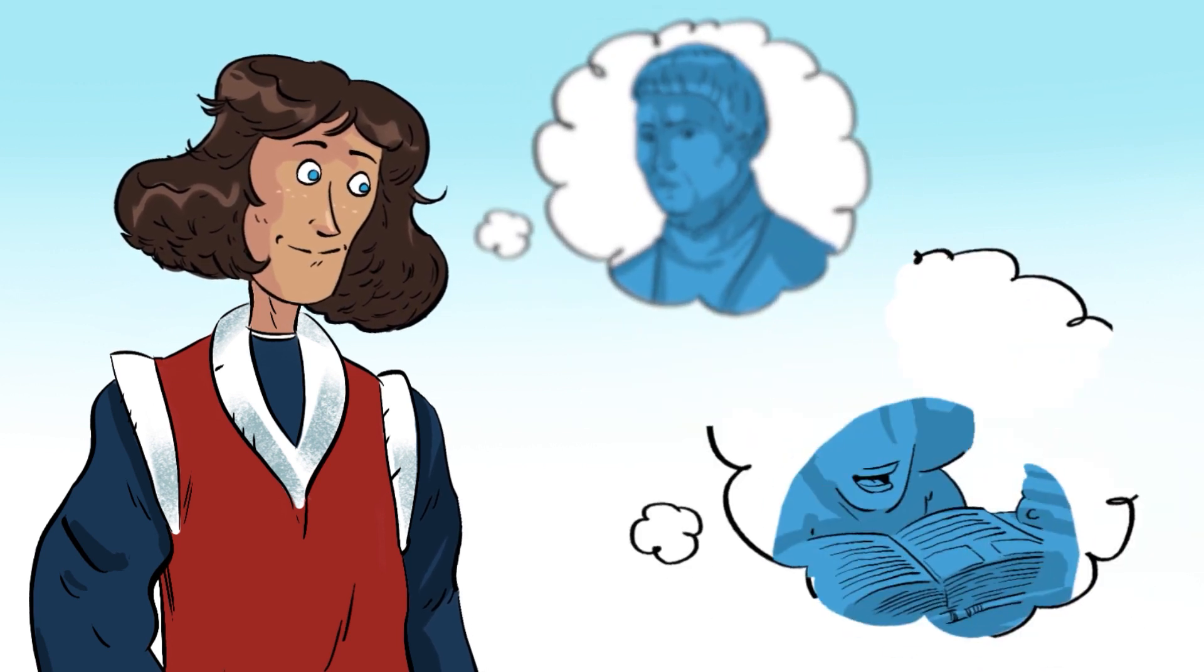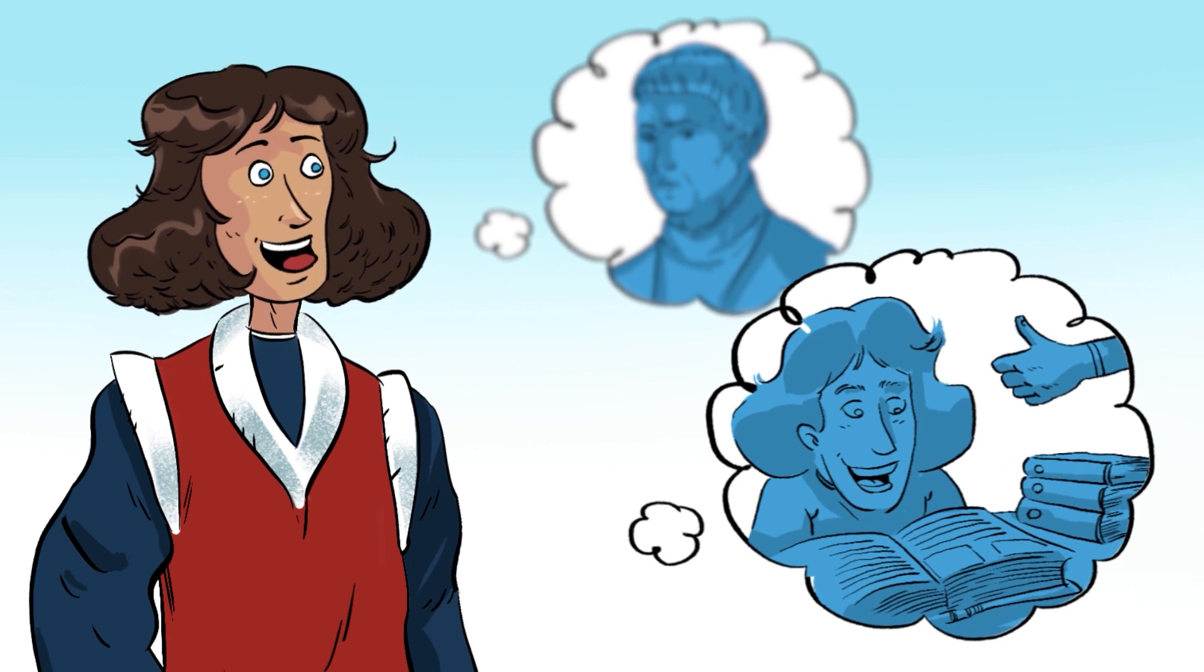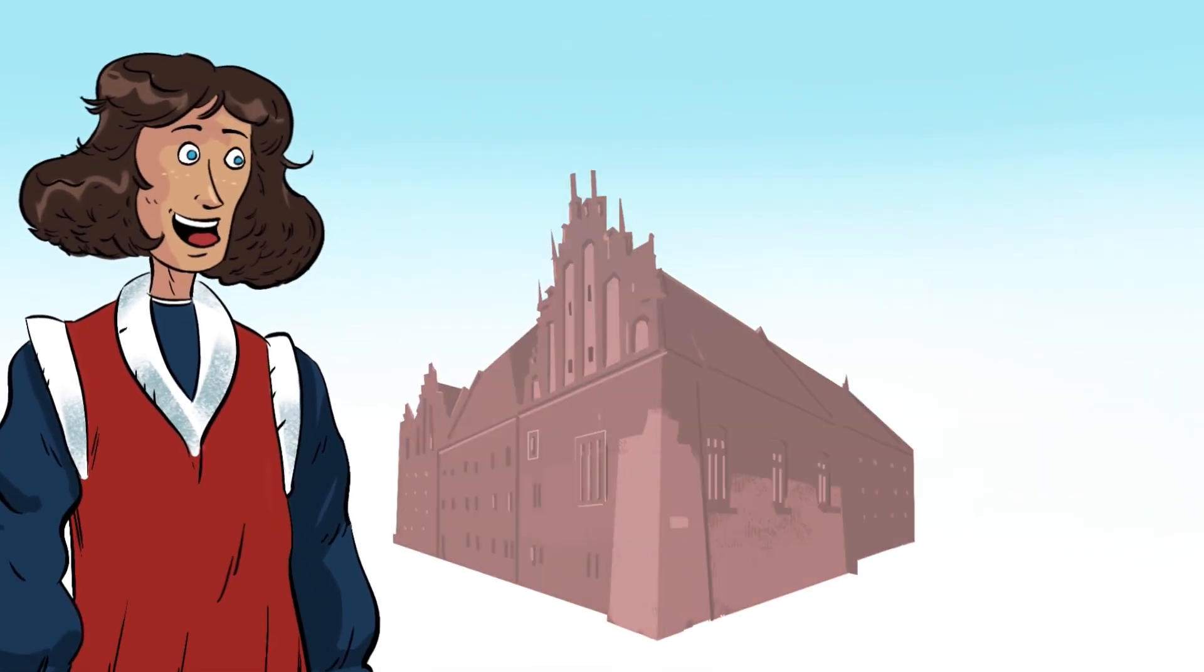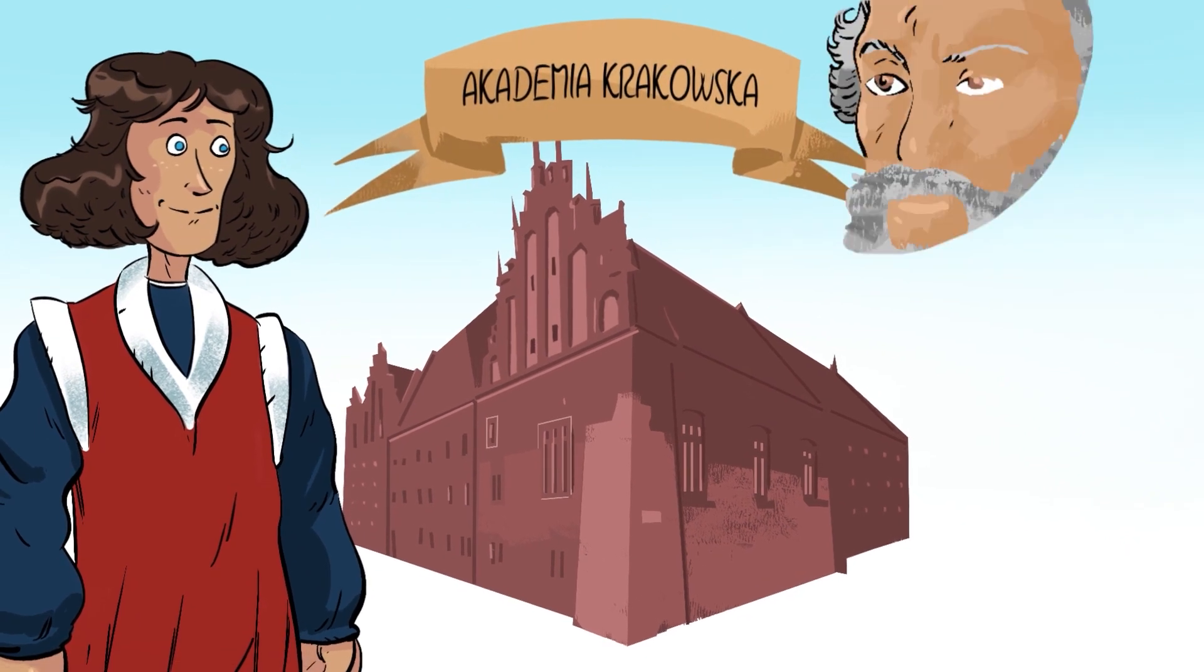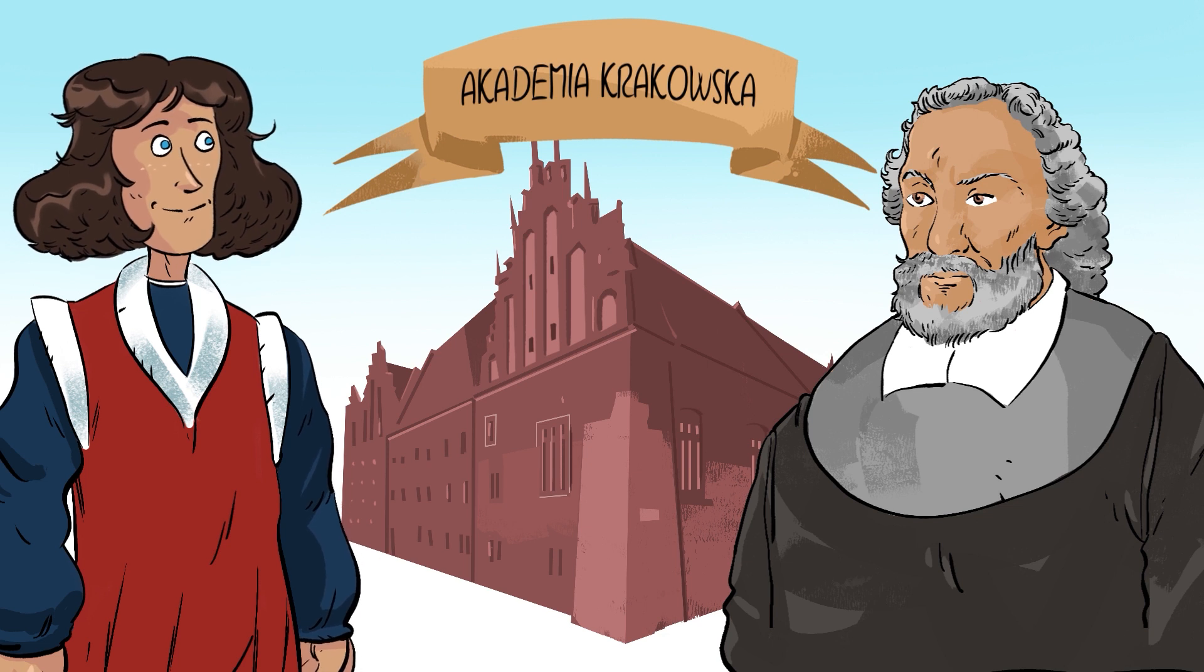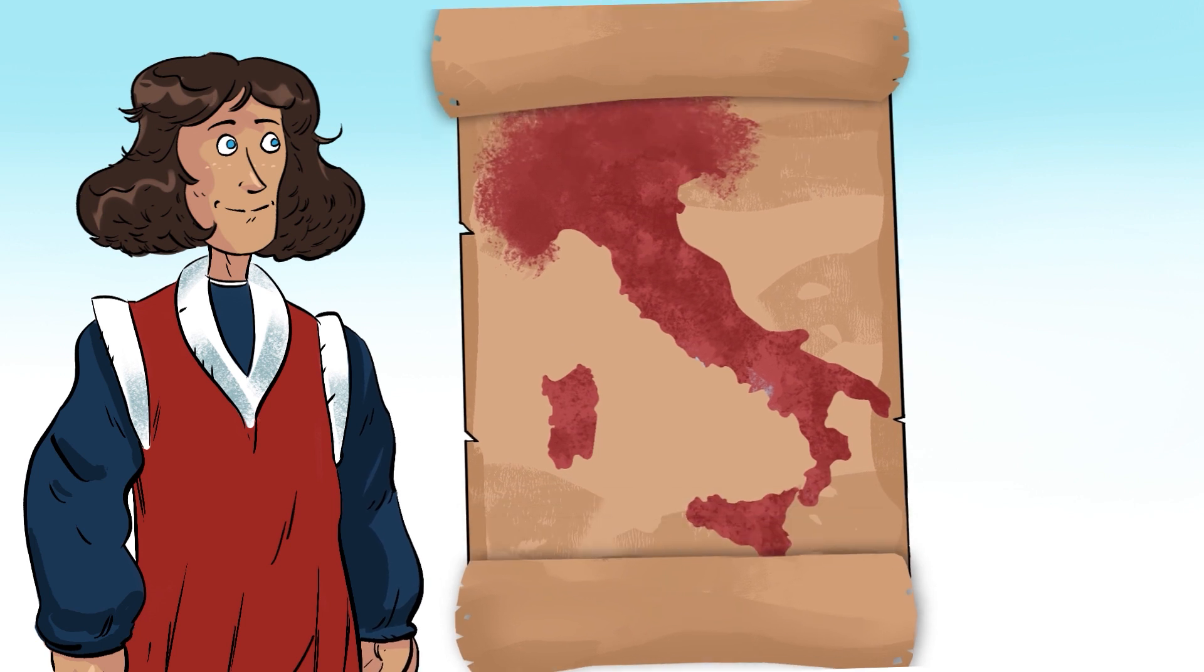Thanks to the uncle's generosity, Nicolaus could attend the university and gain complete education. He studied at the Krakow Academy under the guidance of Wojciech from Brudzewo. The teacher whose lectures led to the flourishing of astronomy as the academy's subject.